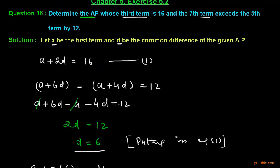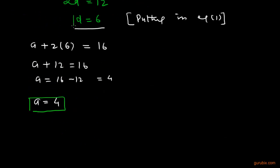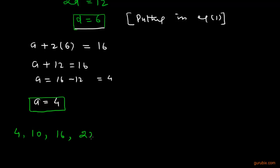Now we find the AP. We have the common difference and the first term. The first term is 4; the second term is 4 plus 6, which is 10; the third term is 4 plus twice 6, which is 4 plus 12 equals 16; and the fourth term is 22. So this is our AP: 4, 10, 16, 22.